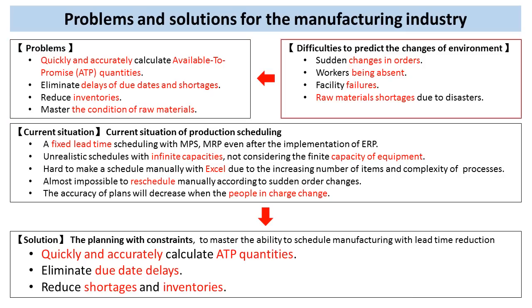But, as it is difficult to predict the changes in the external environment, it is difficult to solve these problems. For example, the sudden changes in orders, workers being absent, facility failures, or the shortage of raw materials due to disasters.